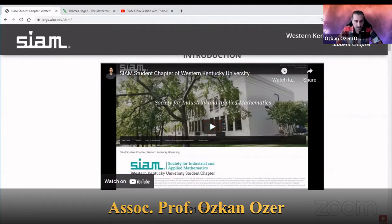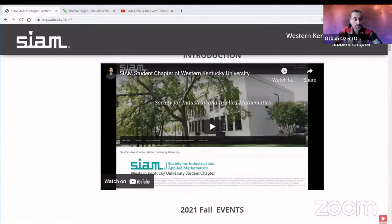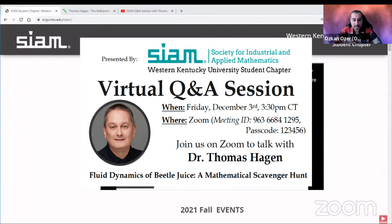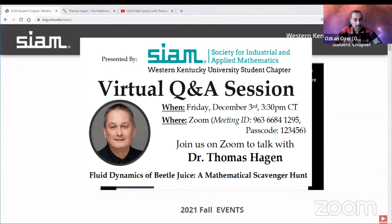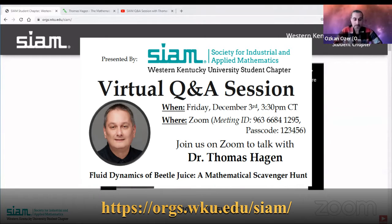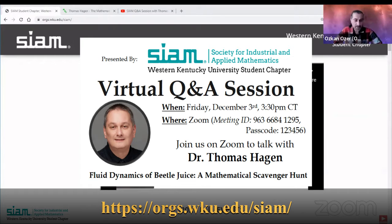Let me quickly start with introducing our speaker. Thomas Hagen is a professor of mathematics at the University of Memphis. Before joining the University of Memphis in 2003, he had academic appointments at the University of Wales, UK, and the Technical University of Munich, Germany. He was born and grew up in Western Germany and began his academic career in Munich with a major in mathematics and a minor in computer science.